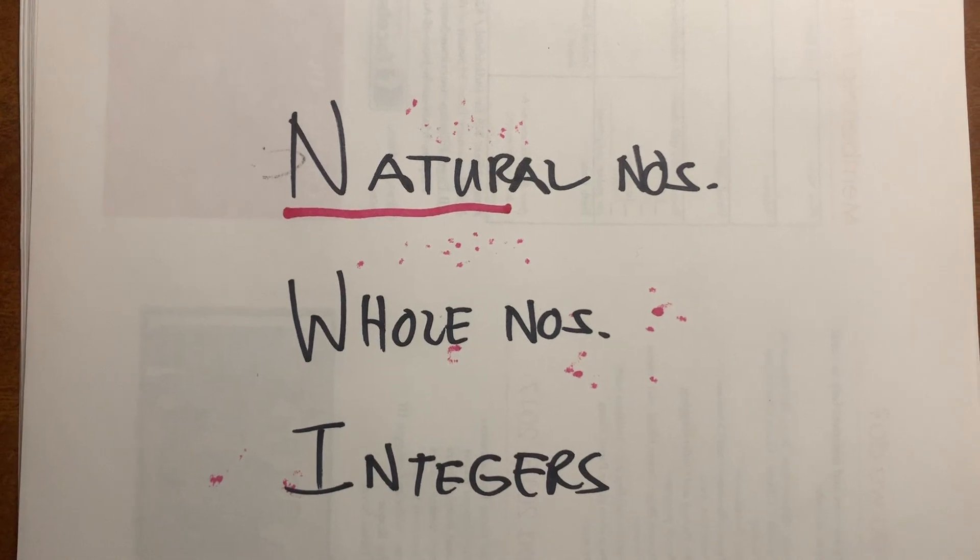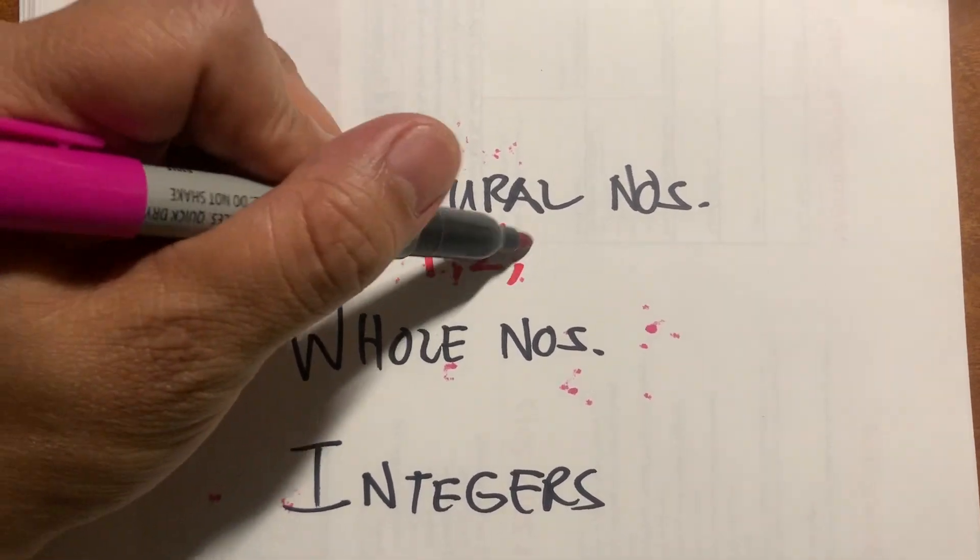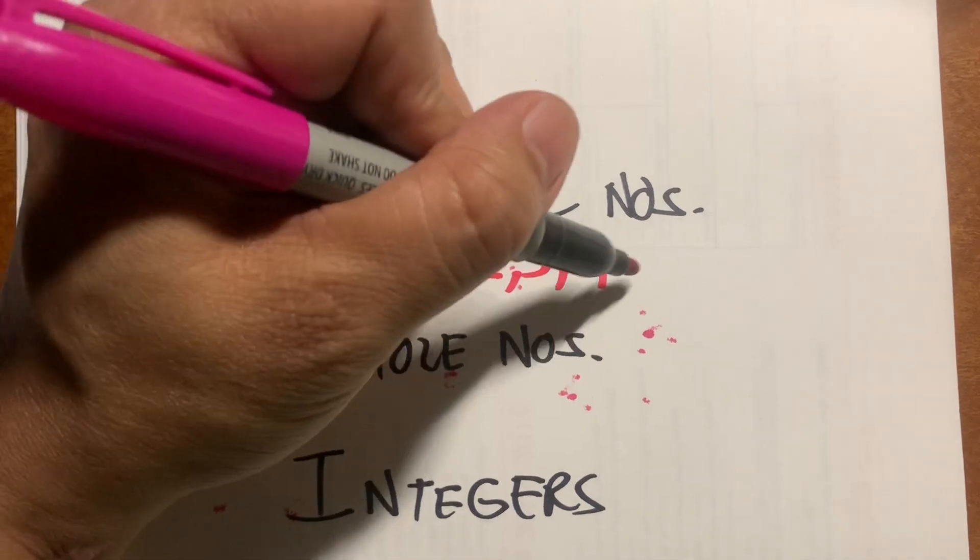A kid learning how to count begins with 1, 2, 3, 4, going up.